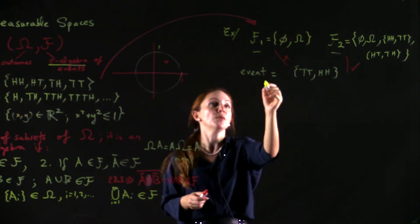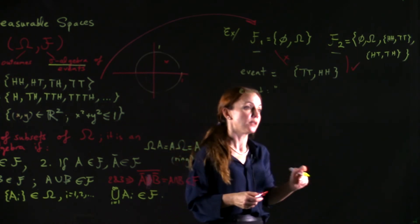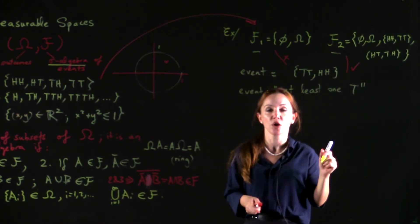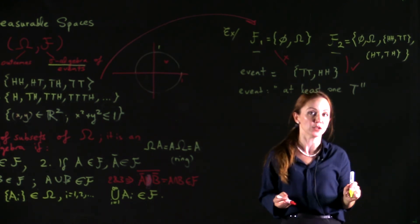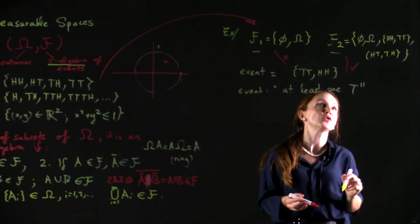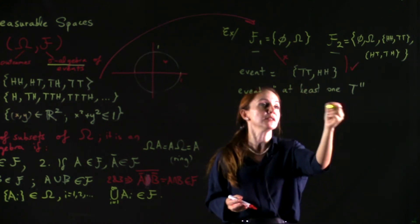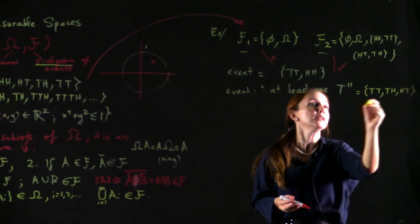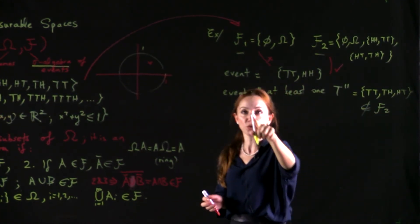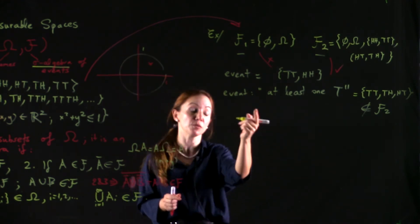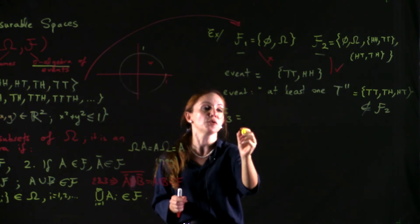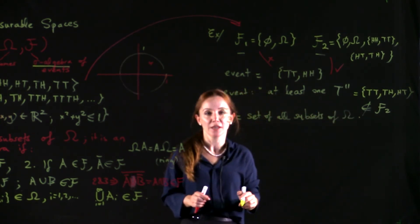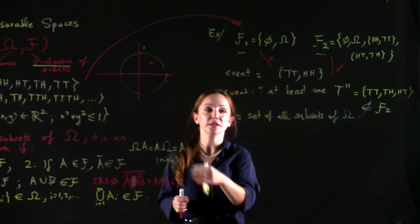On the other hand, if the event we're looking for is getting at least one tail, having at least one of the outcomes be tails, then F2 is not going to give us information either, because the event at least one tail is this set HT, TH, TT. And this is not in F2. So in order to describe this event, we would need a more detailed algebra.